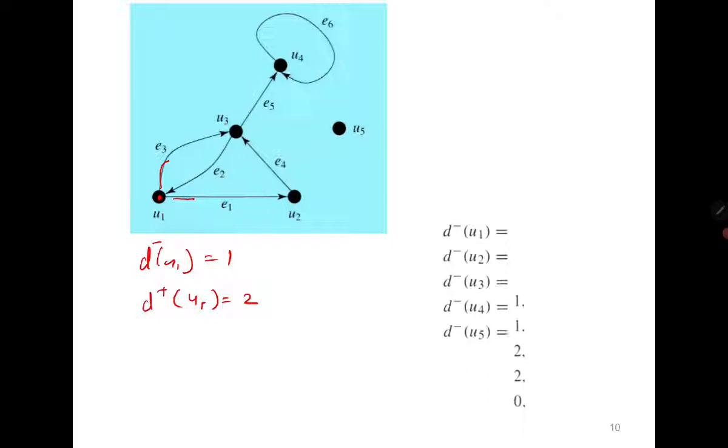Similarly, we can compute the in-degree and out-degree of all the vertices. For u1 it's one, two; for u2 it's one, one. It's interesting to see the in-degree and out-degree of u4 because it has a loop. This loop is contributing one to the in-degree as well as contributing one to the out-degree. That's why the in-degree of u4 is two, because these are the two edges coming inside, but the out-degree is one because one edge is going out.